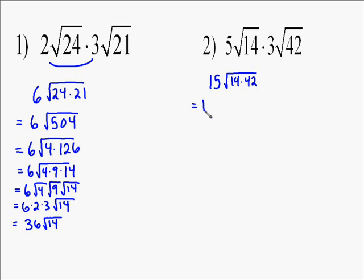We multiply 14 times 42, which is 588. Now we need to factor that, so we try 4 first.